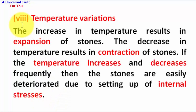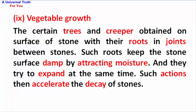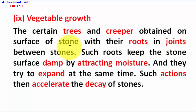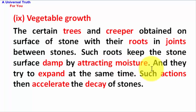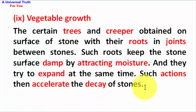Vegetable growth: Certain trees and creepers grow on the surface of stone with their roots in joints between stones. Such roots keep the stone surface damp by attracting moisture, and they try to expand at the same time. Such actions then accelerate the decay of stones.